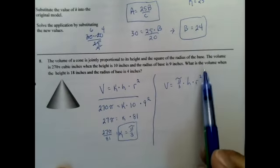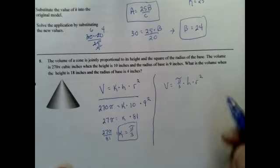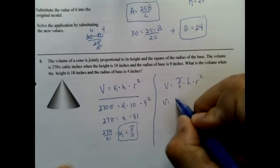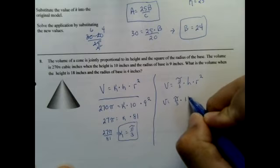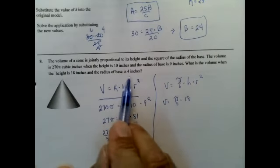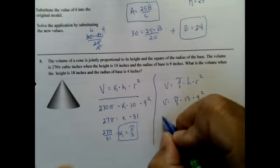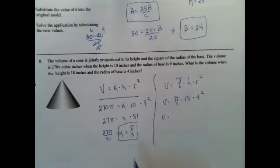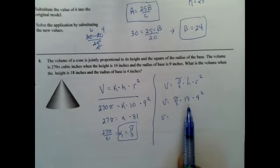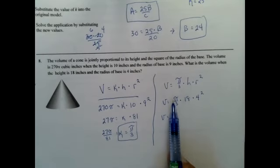Now I have a new equation: v equals π over 3 times h times r squared. Now I come back up. What is the volume when the height is 18 and the base is four inches? I got 216 for that. For this? Yeah. Did you get a pi in there somewhere?